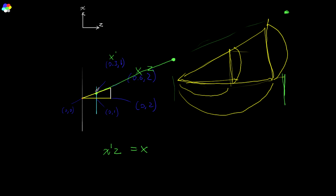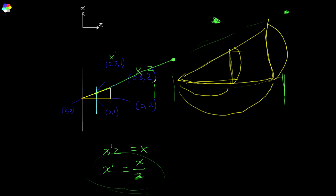We're not trying to calculate object-space coordinates from image-space — it's the other way around. We have object-space coordinates and want to find them on the image plane. Rearranging the equation, divide both sides by z: x_prime equals x divided by z. That's how you get projection — that's as simple as it is. The farther an object is, the larger z is, the more you divide, and the smaller it appears in image space. That's all the math required for perspective projection: just divide by z.